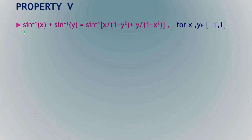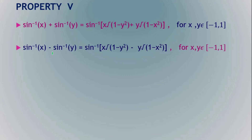The next property: sin⁻¹(x) + sin⁻¹(y) = sin⁻¹(x·√(1 − y²) + y·√(1 − x²)), where x and y are both in the closed interval [−1, 1]. This can be proved by letting sin⁻¹(x) = α, sin⁻¹(y) = β, similarly to the previous proof. For sin⁻¹(x) − sin⁻¹(y), the formula is the same with signs changed.